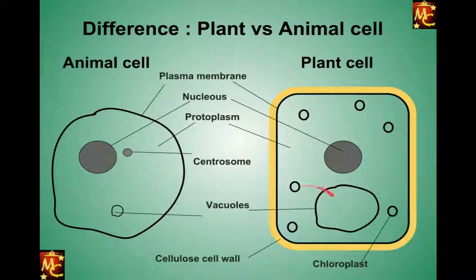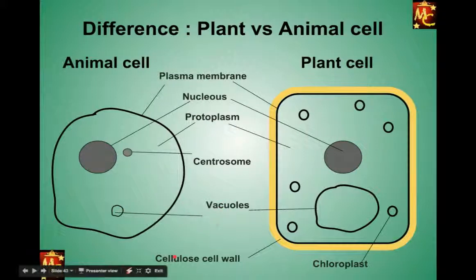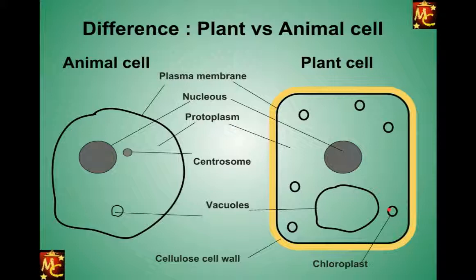So both cell types can have vacuoles, but sometimes animal cells don't have vacuoles at all — so this is a special property of plant cells. Additionally, plant cells have chloroplasts, which animal cells do not. These are the basic characteristics of plant and animal cells.